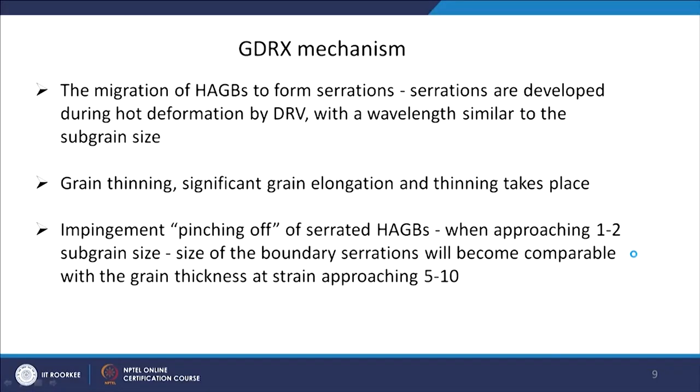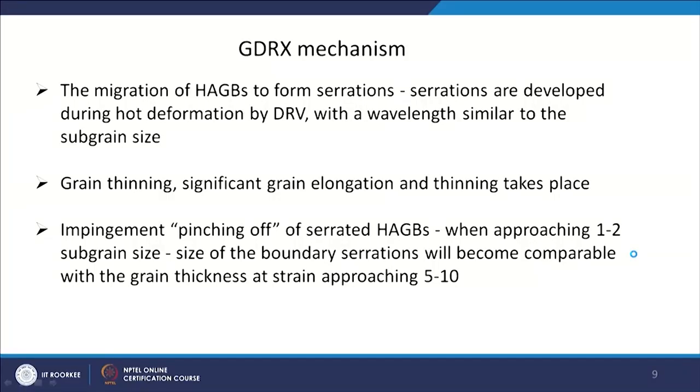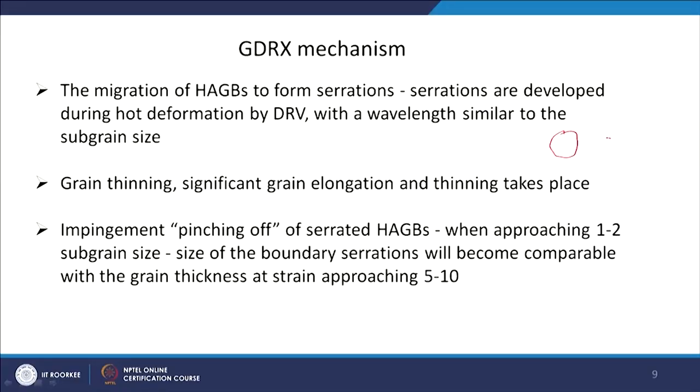What is the mechanics? The high angle grain boundaries migrate to form serrations. These serrations are developed during hot deformation by dynamic recovery with a wavelength similar to sub-grain size. As sub-grains form at the vicinity of the high angle grain boundary, they form serrations, and this wavelength of the serration is equal to the size of the sub-grains. This is also a flattening or grain-thinning process — if you start with an equiaxed grain, progressively it will become more and more flat, with serrations in the grain boundary.